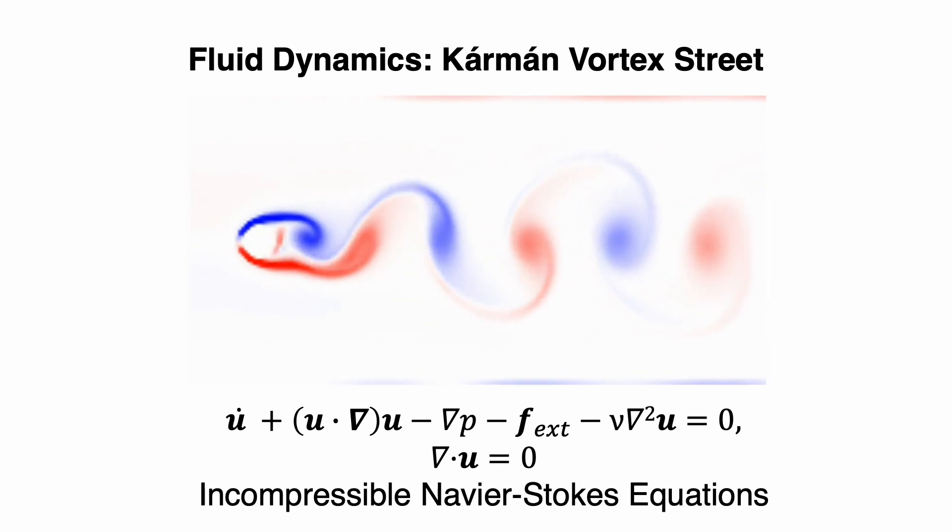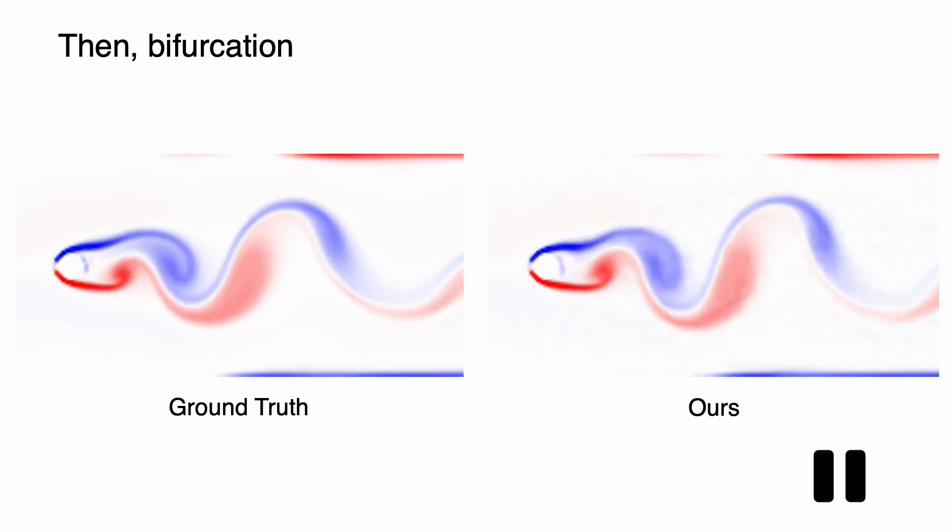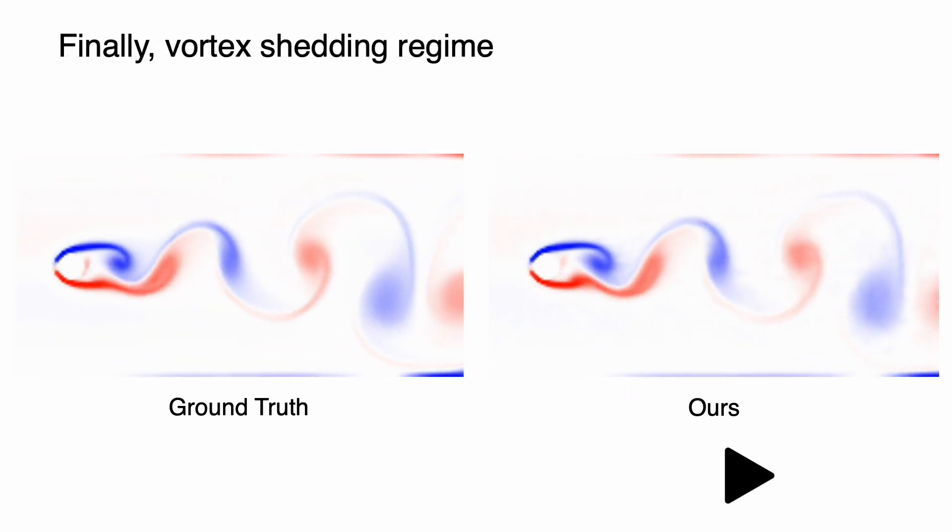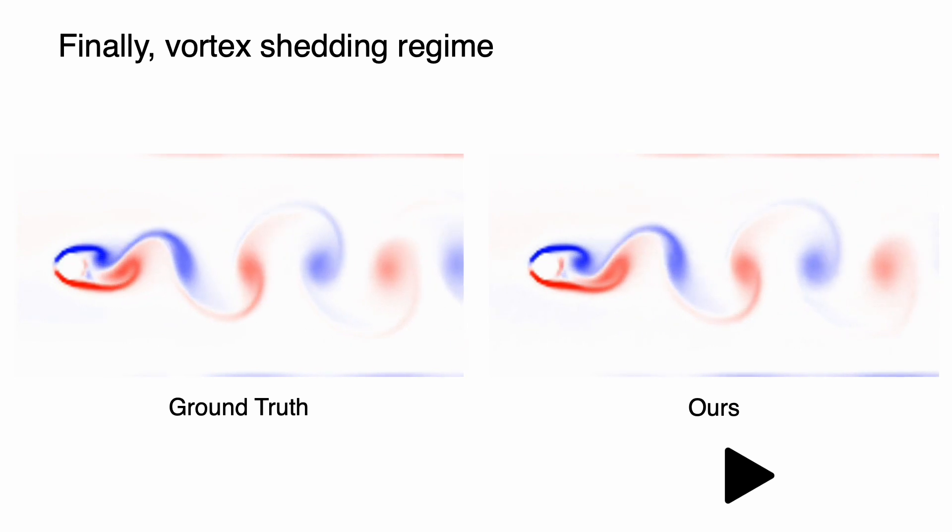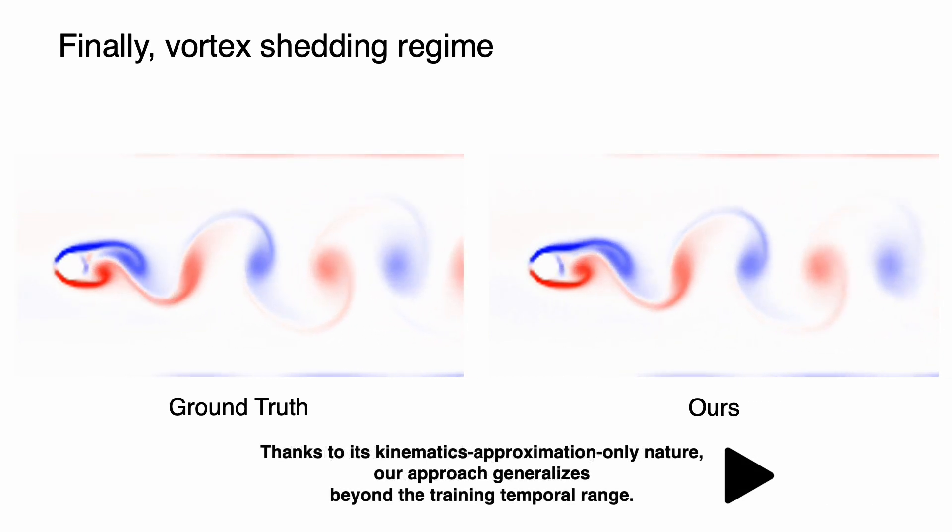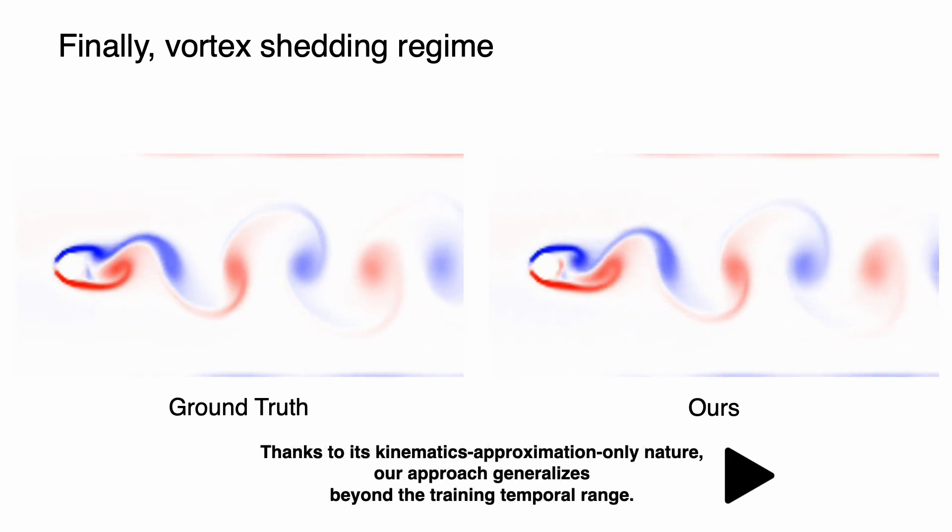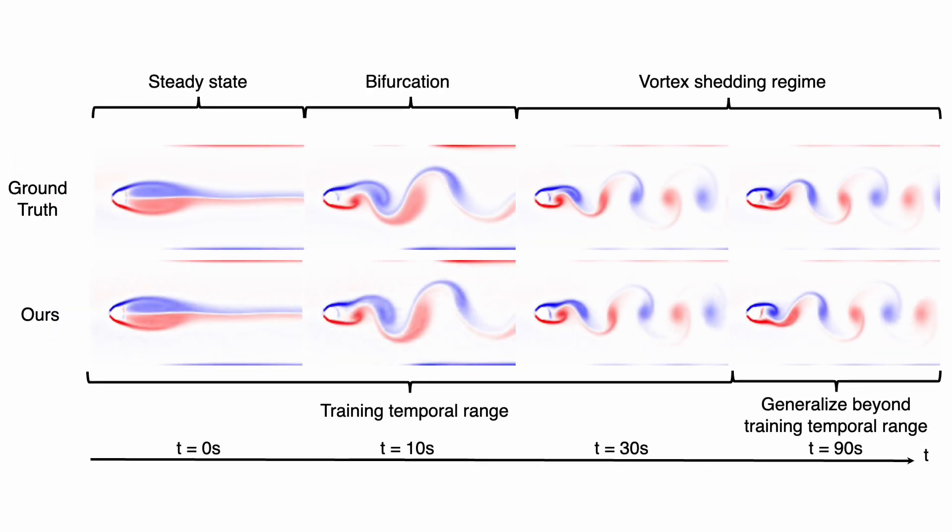Next, we look at our ability to capture incompressible Navier-Stokes equations by exploring common vortex street examples. Our latent space dynamic solver accurately captures the flow at steady state, at bifurcation, and after when exhibiting the periodic vortex shedding regime. Thanks to our kinematics approximation-only nature, our approach generalizes beyond the training temporal range. We can see that our latent space dynamic solver is able to track the ground truth for extended periods of simulation across difficult flow states.